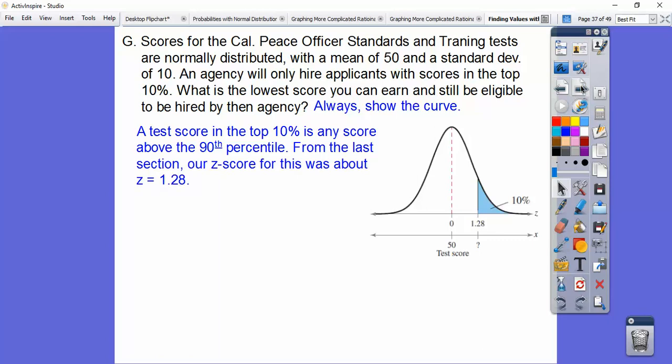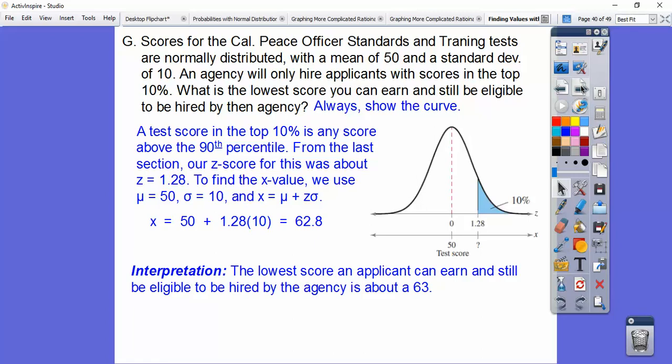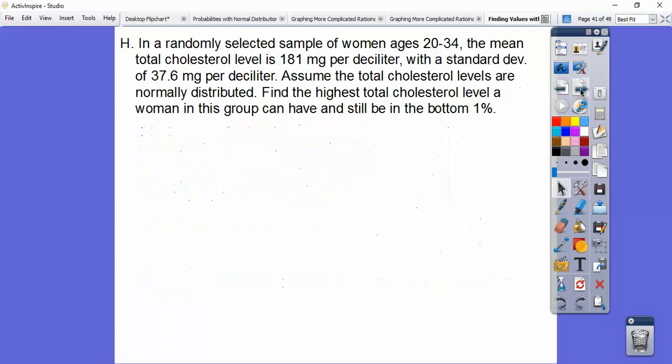So our test score is in the top 10%, above the 90th percentile. So from the last section, we found out 0.90 was 0.8997, which gave us a z-score of 1.28. So there's our z-score. So now we know that the mean is 50 and the standard deviation is 10, and we go ahead and just plug it into our formula, and we get about 62.8. What does that mean? Well, that means that the lowest score an applicant can earn and still be eligible to be hired for the agency to be in the top 10% is a little bit more than 62.8, so 63 or above right there.